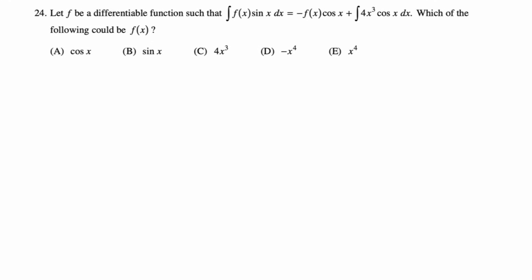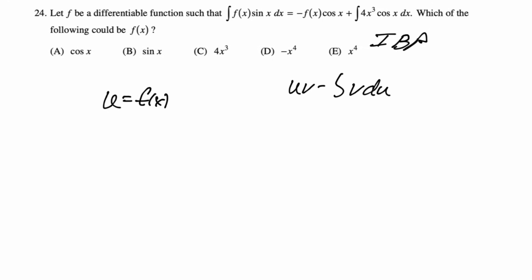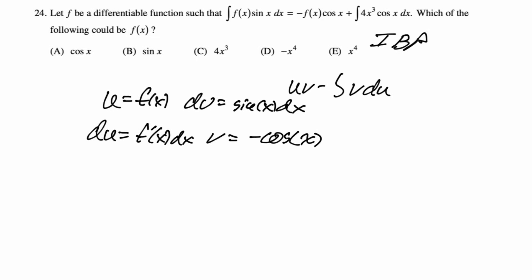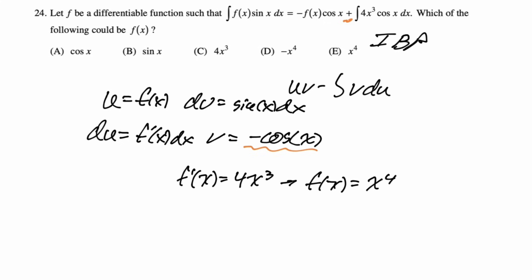This is definitely integration by parts — the integral of F times sine is classic. The formula is UV − ∫V dU. Let U = F(x), dV = sin(x) dx, so dU = F'(x) dx and V = −cos(x). The negative on cosine explains why the formula gives a plus sign. The integral becomes −F(x)cos(x) + ∫cos(x)·F'(x) dx. Working backward from the given expression, F'(x) = 4x³, so F(x) = x⁴. Answer is E.